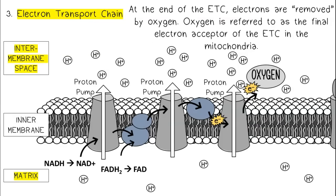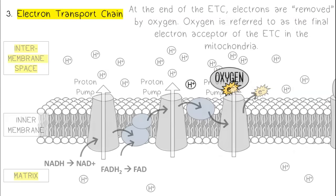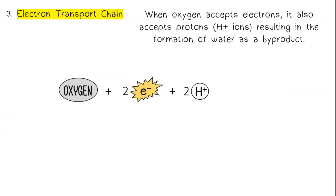At the end of the ETC, electrons are removed by oxygen. Oxygen is referred to as the final electron acceptor of the ETC in the mitochondria. When oxygen accepts electrons, it also accepts protons, resulting in the formation of water as a byproduct.